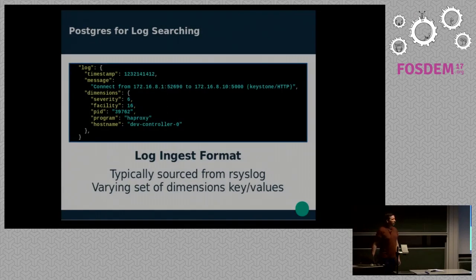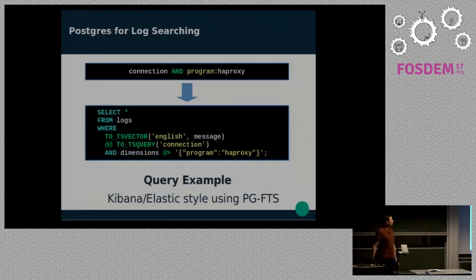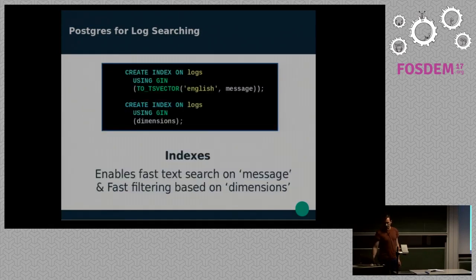So, this is kind of the data we get. It typically comes from our syslog. You get things like severity, the program name, host name, and you get the message. So, again, basic schema. Timestamp, message, dimensions. And the sort of queries we want to do, if you're used to using kind of Elastic and Kibana, you might want to do things like this. So, you want to say, find me logs with the word connection, where the program name is HA proxy. And we can do those with Postgres. So, Postgres has got full text search. It's admittedly a bit longer. But we can do a TS query on the message, and then we can do a contains on the dimensions.